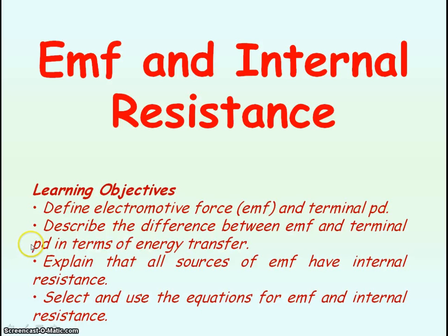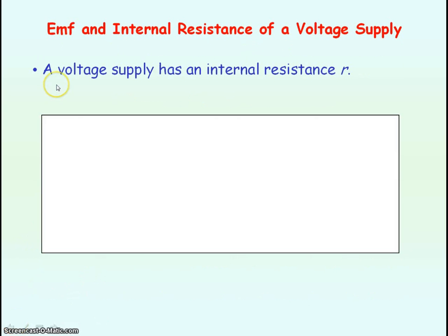We're going to be looking at electromotive force, that is EMF, and internal resistance of a cell. A voltage supply has internal resistance, which we give by the symbol little r. By voltage supply, we mean a cell, a battery of cells, or a power supply.